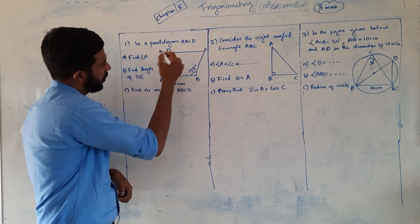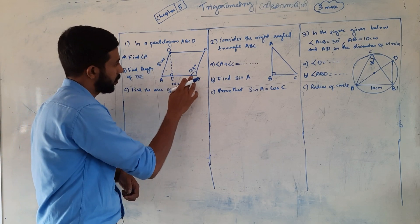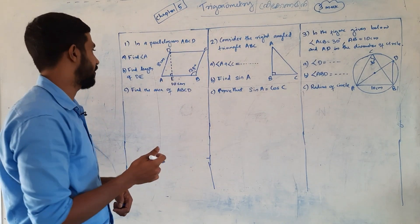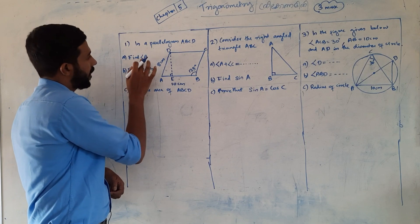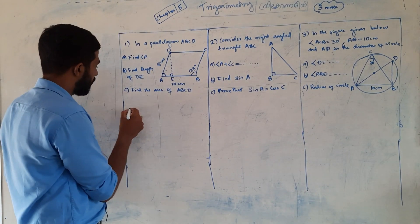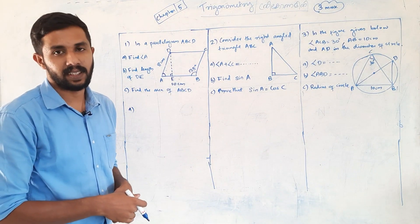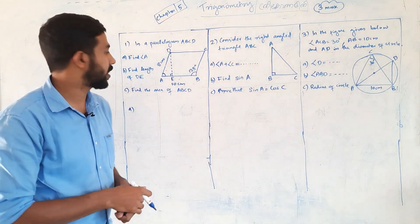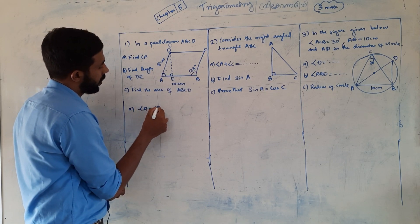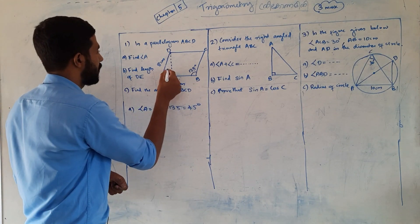Here, ABCD — AB is 10 centimeters and AD is 8 centimeters. The adjacent angles in a parallelogram add up to 180 degrees. So angle A is 180 degrees minus the given angle. That gives us 45 degrees. What angle? 45 degrees.